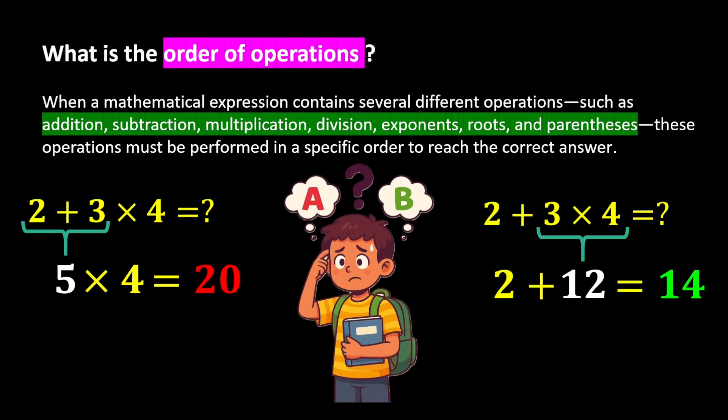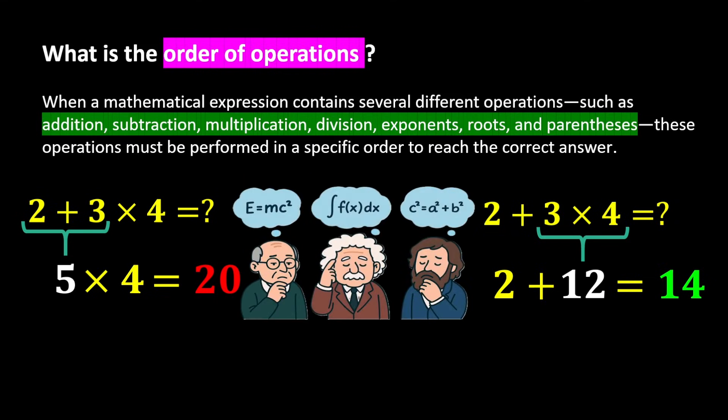But which answer is correct, 20 or 14? This is where the order of operations becomes important. Imagine everyone choosing their own method, mathematics would become disorganized. Therefore, mathematicians agreed on a universal rule to prevent confusion, called the correct order of operations.